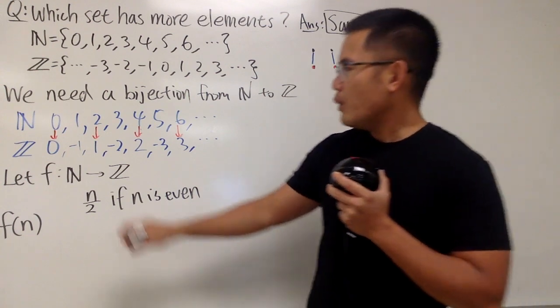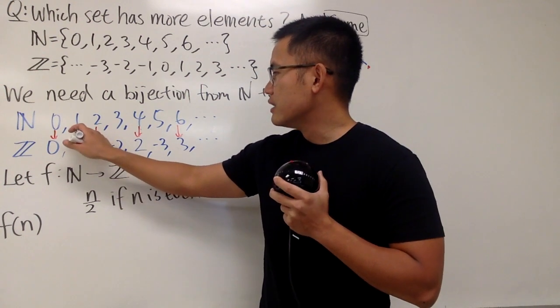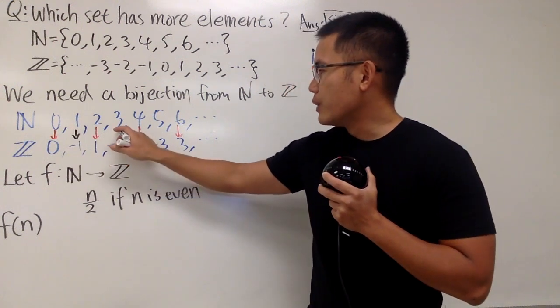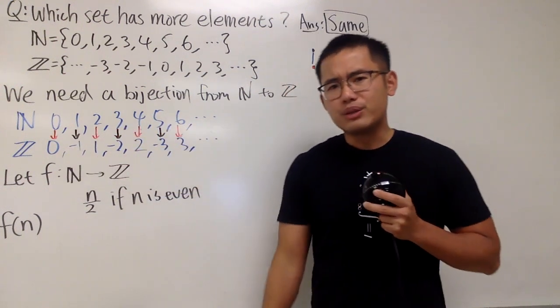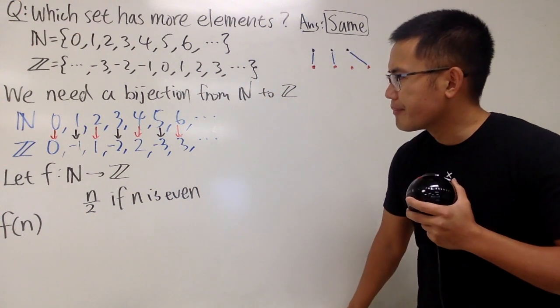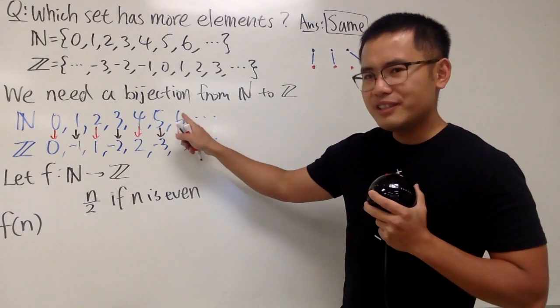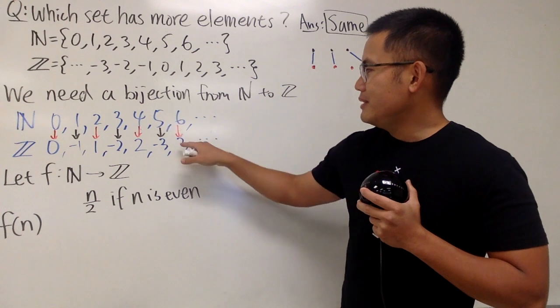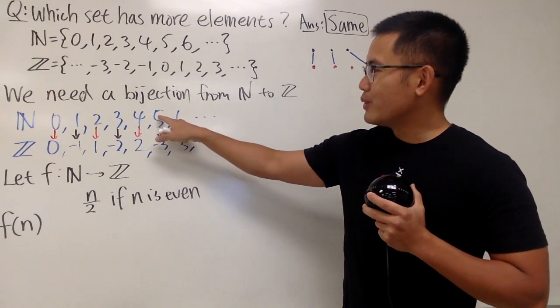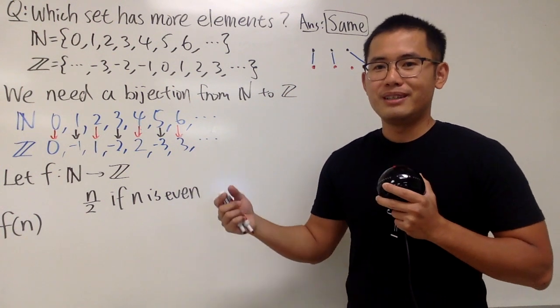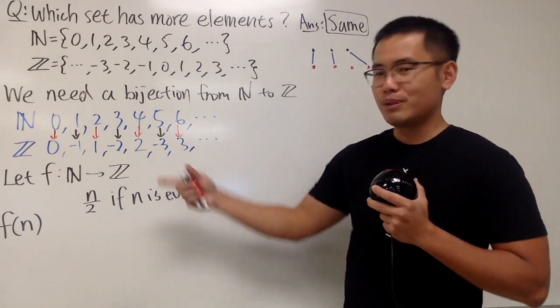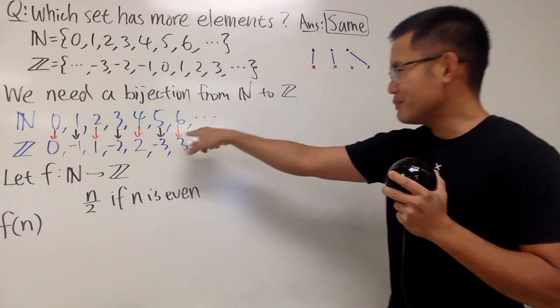Okay. Now the question is, how can we go from the odds to this? So how can we go from 1 to negative 1? How can we go from 3 to negative 2? How can we go from 5 to negative 3? Hmm. Well, check this out. It's almost like this. If I can add 5 and add 1 to it, divide it by 2, that would be 3. And then I just need to multiply by negative. That's it. Right? So that's pretty good.